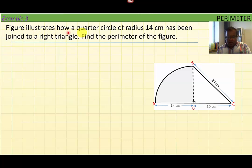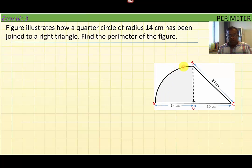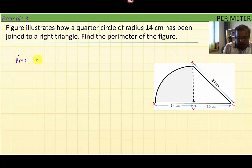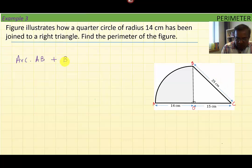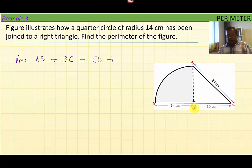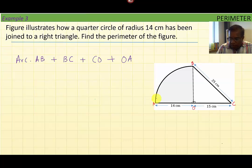Example number three. The figure illustrates how a quarter circle of radius 14 centimeters has been joined to a right triangle. Find the perimeter of the figure. Here a quarter circle arc AB is attached to a right triangle. Clearly, the perimeter is the arc length of AB, plus the length of BC, plus the length of CO, plus the length of OA.